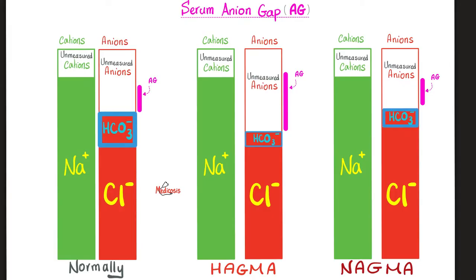When my kidney fails, all these toxins accumulate in the blood, adding to the unmeasured anions. The unmeasured anions increase, and therefore the anion gap — the difference between unmeasured anions and unmeasured cations — will enlarge. This is called high anion gap metabolic acidosis.